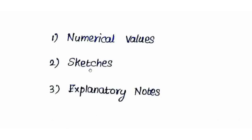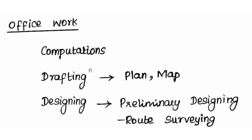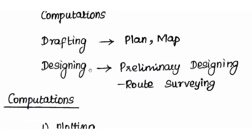So those are the three types of field notes: numerical values, sketches, and explanatory notes. Next, we look at the second type — office work. There are three types of office work: computations, drafting, and designing. Computations involve calculating and correcting measured values.